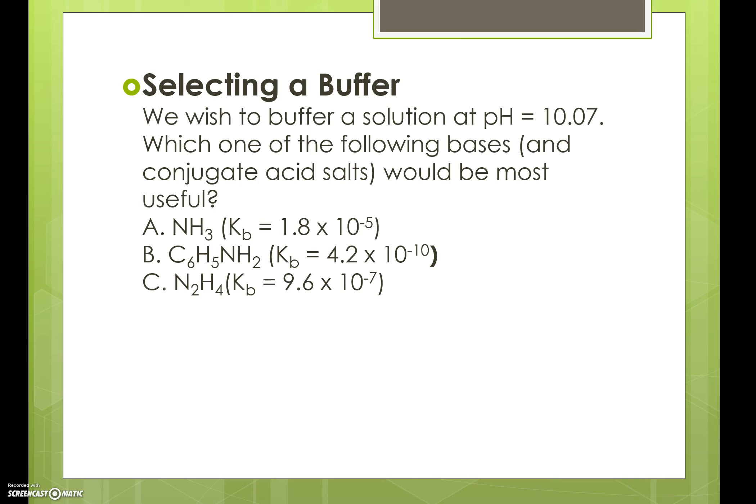We're told that we have ammonia as an option, C6H5NH2 as an option, and N2H4 as an option. We're given the Kb values. What we're going to need to do is take Kb and calculate Ka, take the negative log of Ka, and that will give us the pKa. The one whose pKa is closest to the pH of the desired solution is our choice.